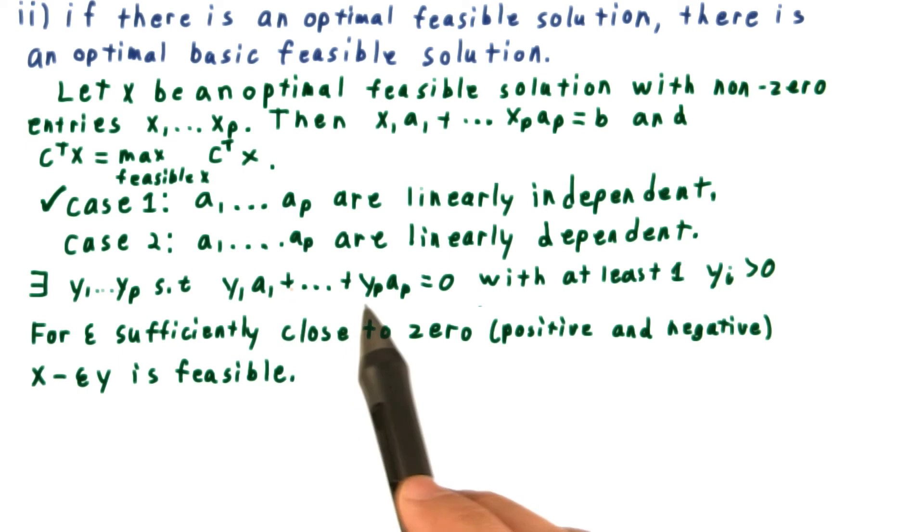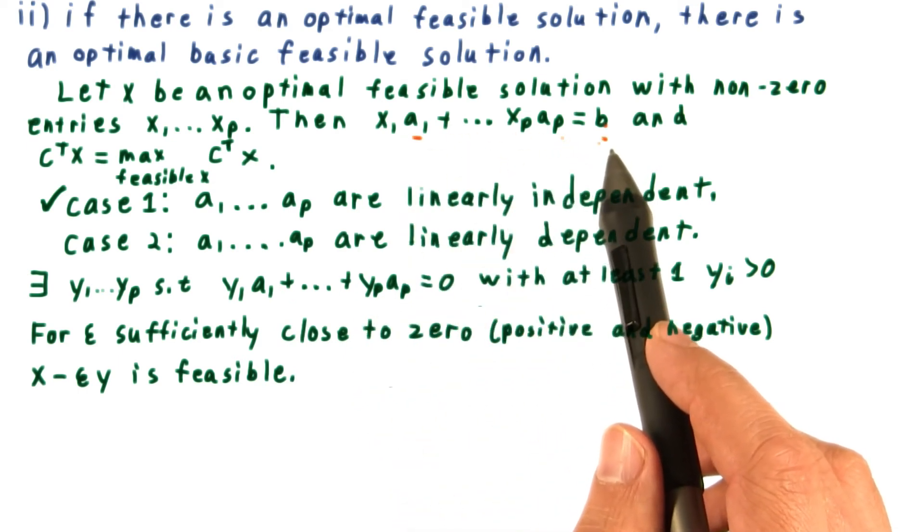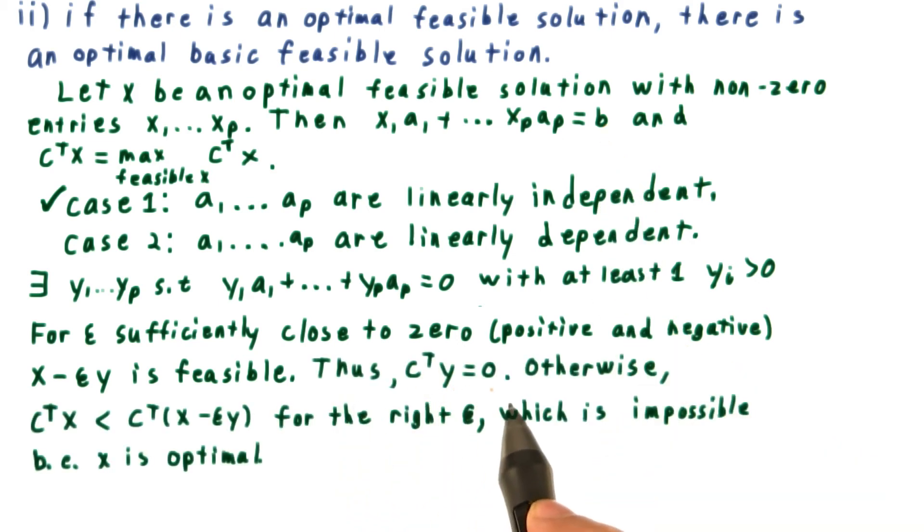Multiply epsilon times this equation and add it to this equation, and we end up still with a set of coefficients equal to b. Thus, c transpose y has to be equal to 0.